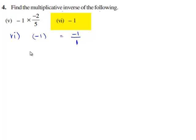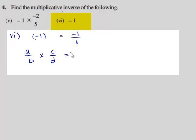Therefore, for every non-zero rational number a by b, there exists another non-zero rational number c by d, such that a by b times c by d is equal to 1.